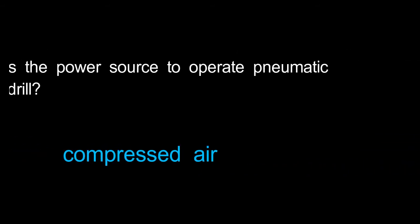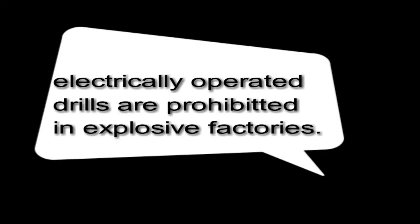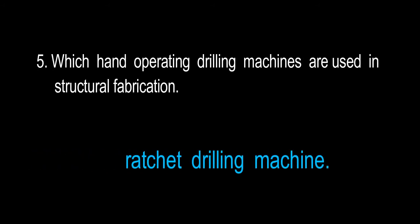What is the power source to operate pneumatic hand drill? It is compressed air. The electric hand drill uses an electric motor. How many types of portable drill machines are used? Ratchet drilling machine is used in structural fabrication.